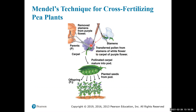For example, to breed purple with white flowers, he would take the stamen from the purple flower and clip those off so the pollen couldn't self-fertilize. Once those stamens were removed, he would take the pollen from the white flower's stamens and directly transfer it to the carpel of the purple flower. The offspring then have heritable traits from both the purple and white parents. These purebred parents are called the P generation, and the first generation of offspring is called the F1 generation.